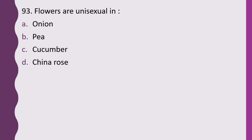Question 93. Flowers are unisexual in: onion, pea, cucumber, or China rose. The correct answer is option C, cucumber.